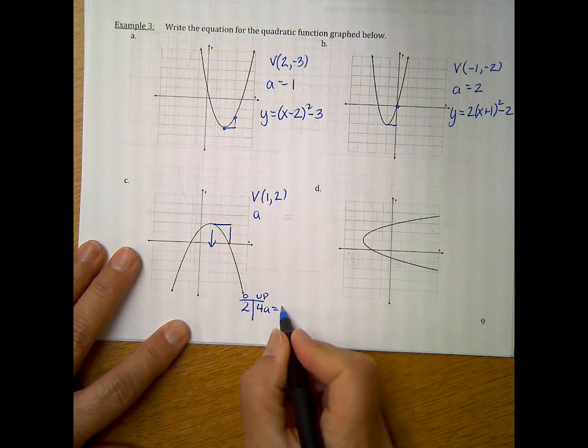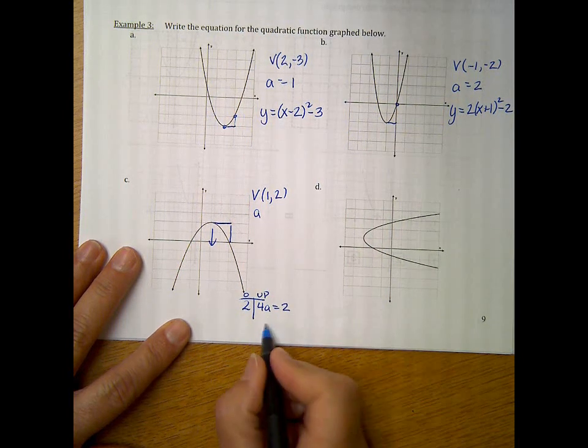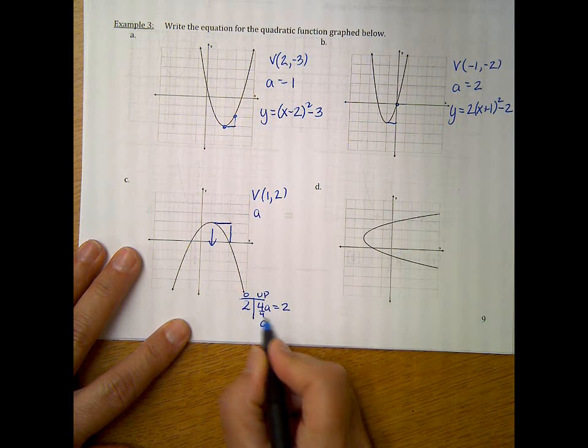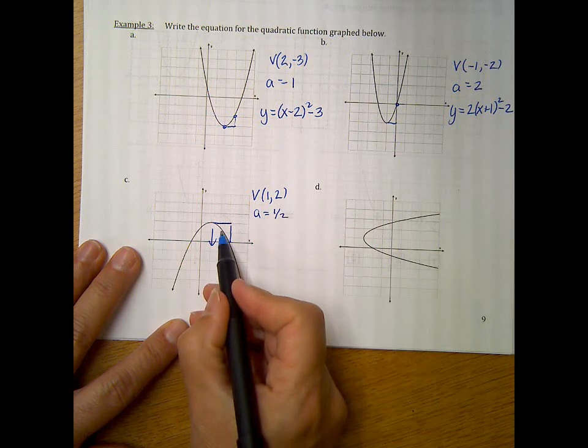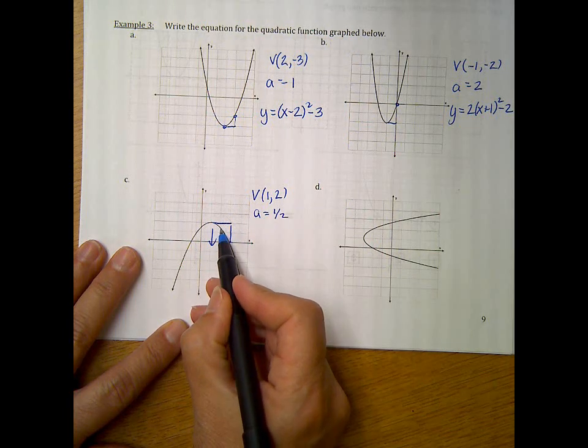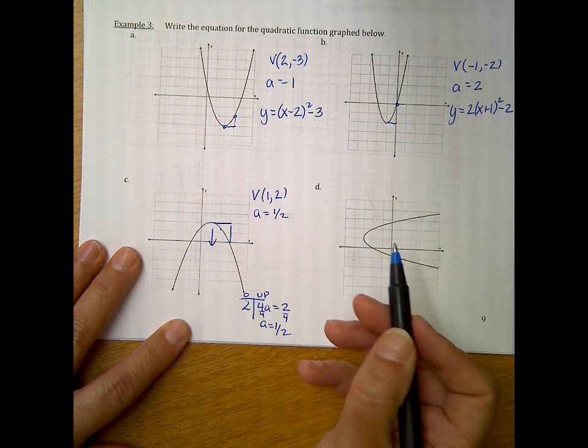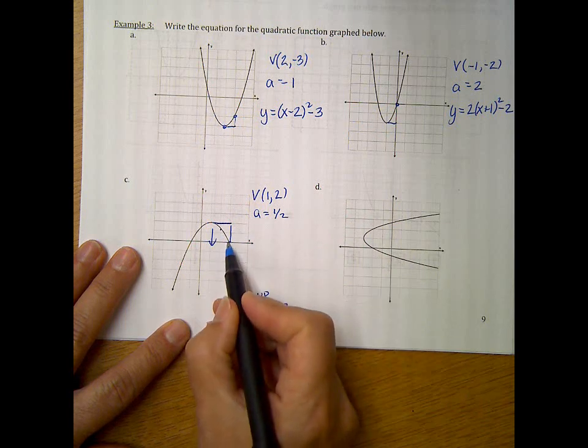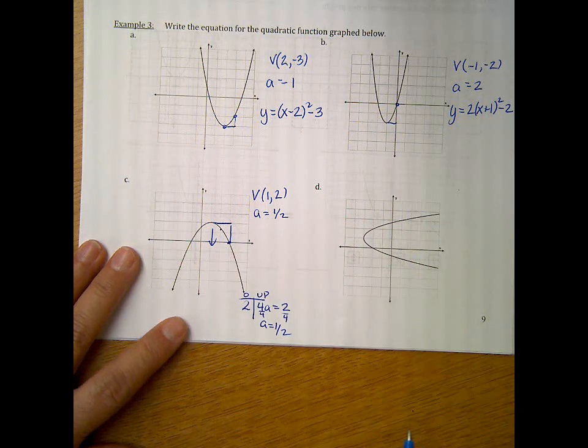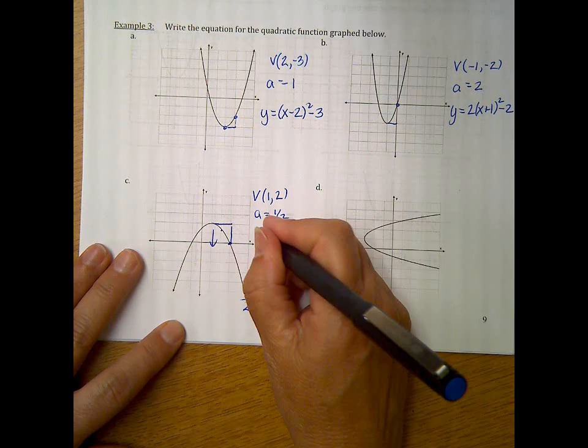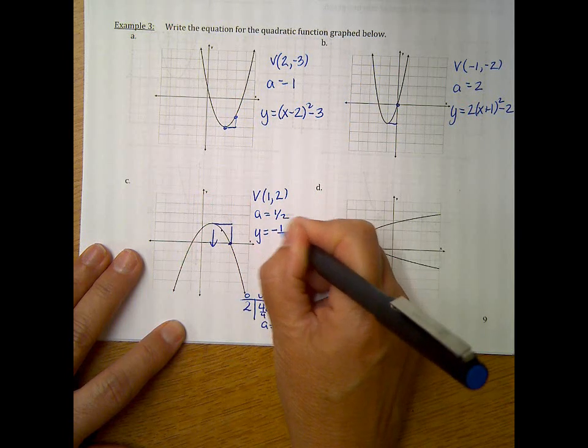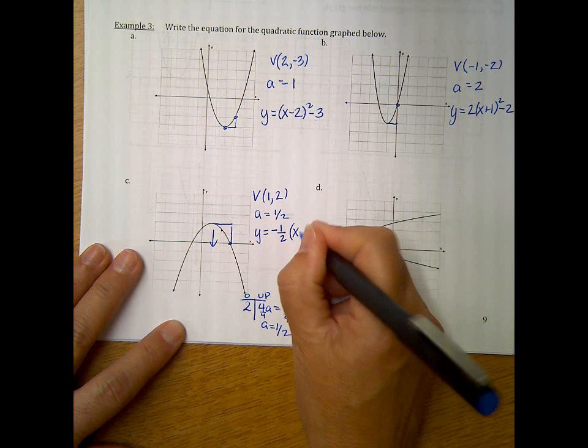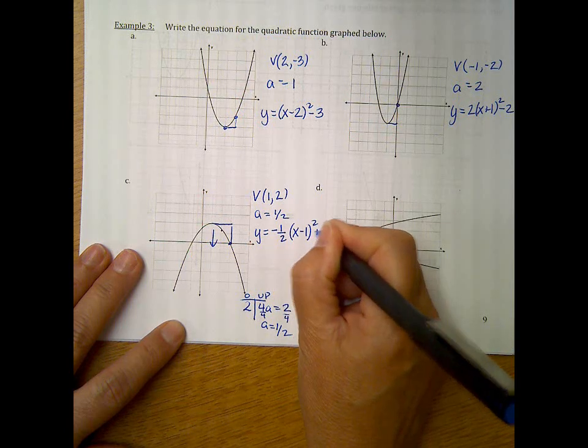So here, my 4 times a is equal to 2. So a, if divide by 4, equals 2 over 4, which is 1 half. So our a value is 1 half. So be careful, if that first over 1 hits at a fraction there, don't use it. Go until you have a nice point that's crossing an intersection like this. So this is y equals, a is negative 1 half, be careful of that, because it faces down, x minus 1 squared plus 2.